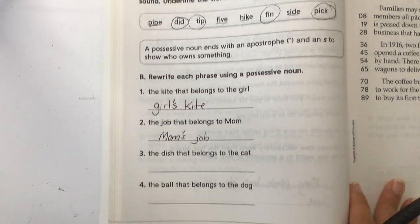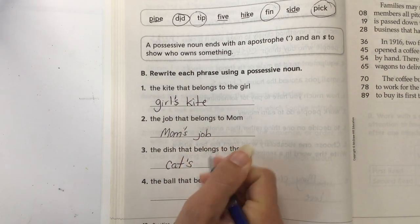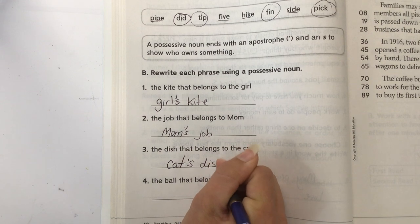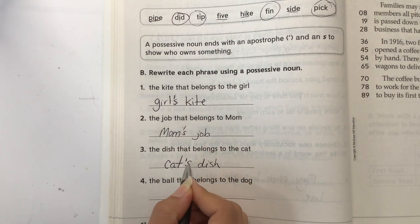The dish that belongs to the cat. So there's one cat, so it's the cat, apostrophe S, the cat's dish. Remember apostrophe S means that there's still one cat, but something belongs to the cat.